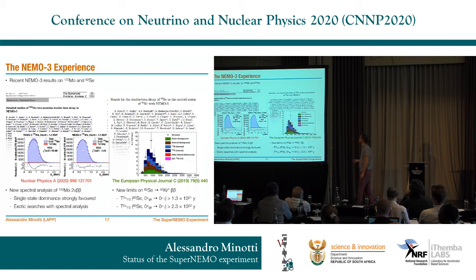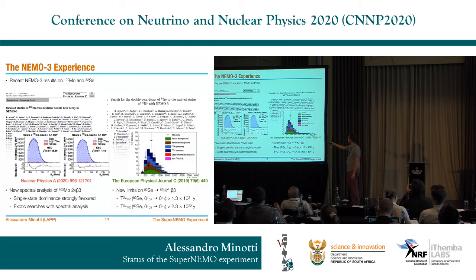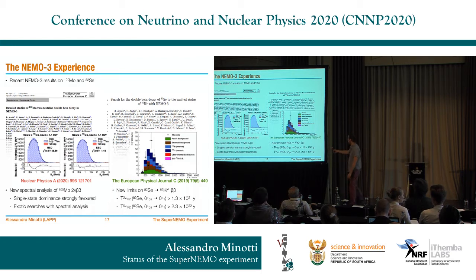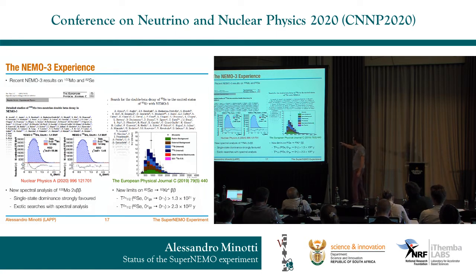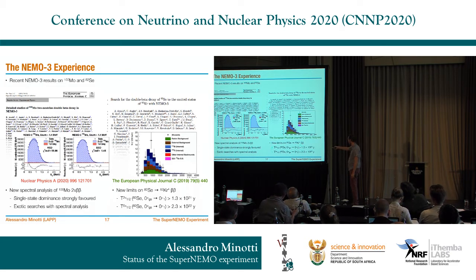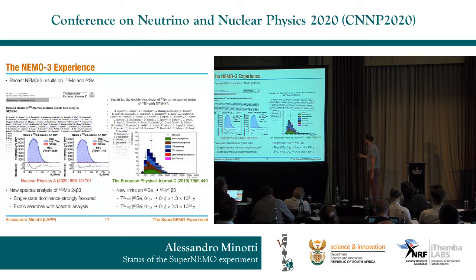Some of the latest NEMO3 results include a detailed study of the molybdenum-100 two-neutrino double beta decay, where we were able to disentangle single-state versus higher-state dominance, highly favoring the single-state. A second paper reports on the decay of selenium-82 into excited states of krypton, and we were able to constrain both lifetimes for this interaction.